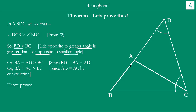But BD is nothing but BA plus AD. So BA plus AD is greater than BC. And we know that AD is equal to AC by construction. So replacing AD with AC, we get BA plus AC is greater than BC. Thus we have proved that the sum of these two sides, AB plus AC, is greater than BC.